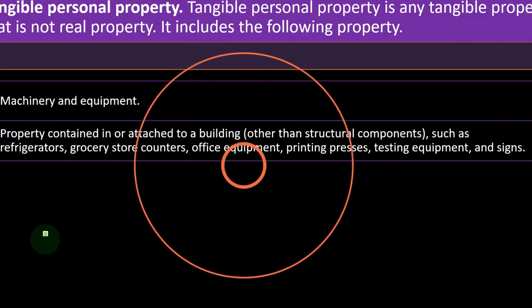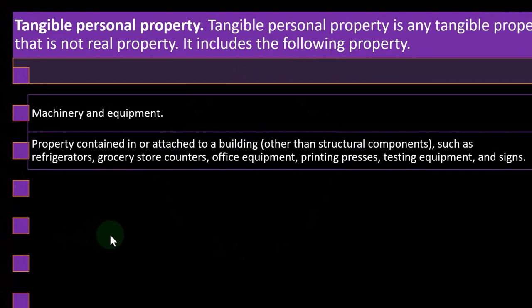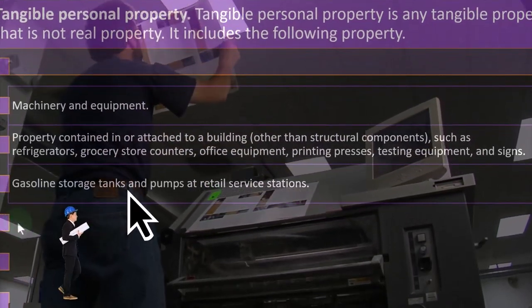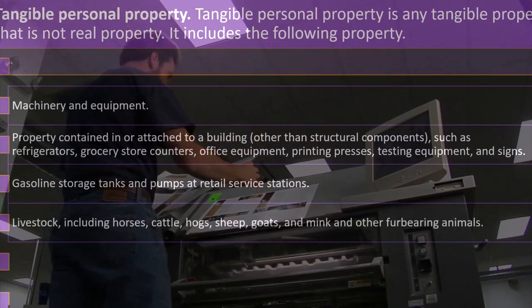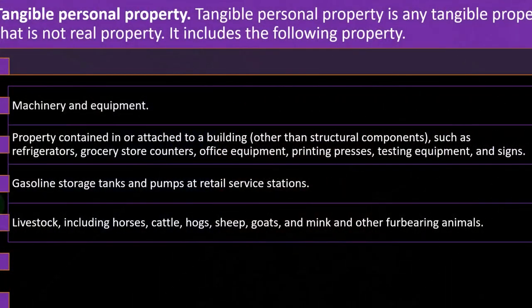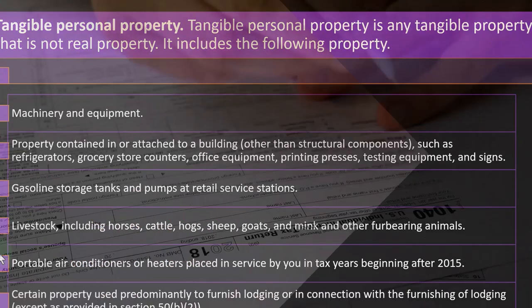Property contained in or attached to a building other than structural components includes: refrigerators, grocery store containers, office equipment, printing presses, testing equipment, and signs; gasoline storage tanks and pumps at retail service stations; livestock, including horses, cattle, hogs, sheep, goats, and mink and other furbearing animals; and portable air conditioners or heaters placed in service in tax years beginning after 2015. That last one gets a little messy — are the heaters and air conditioning part of the building or are they portable?